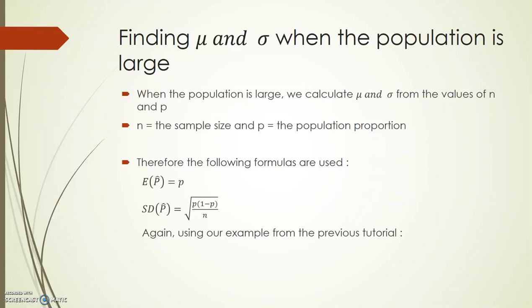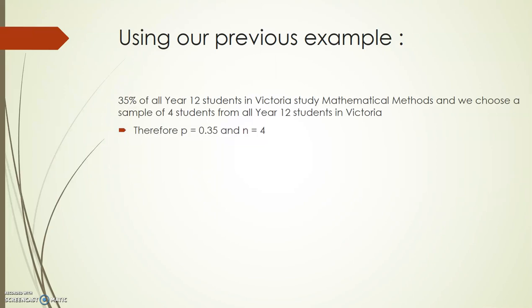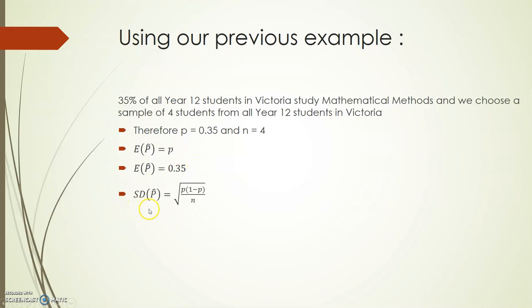Using our example from the previous tutorial: 35% of all year 12 students in Victoria study maths methods and we chose a sample of 4 students from all year 12 students in Victoria. So p, the population proportion, was 0.35 and n was 4. The expected value of p-hat is the population proportion, so the expected value of p-hat is 0.35. The standard deviation of p-hat is the square root of p times (1 minus p) over n, which becomes the square root of 0.35 times 0.65 over 4, giving a standard deviation of 0.2385, to four decimal places.